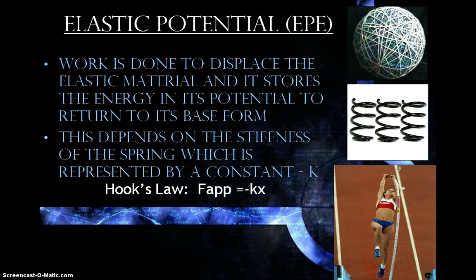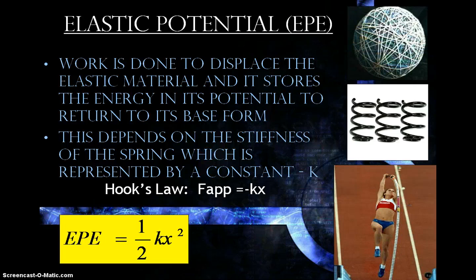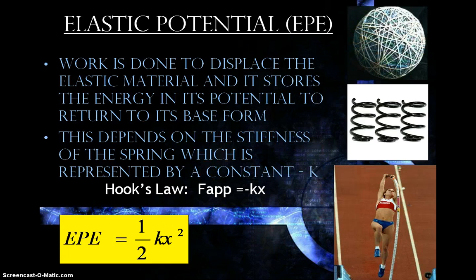In order to figure out the stored energy of the object, we say that elastic potential energy is equal to one-half K X squared. K being the spring constant of the spring — you'll pretty much be told what that value is. And X being the change in the length of the spring or the position of the elastic object.